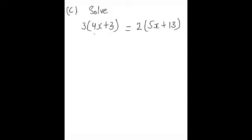How to expand the brackets: we need to multiply the value outside of the bracket with the inside of the bracket. So 3 times 4x is 12x, and the sign is plus, 3 times 3 is 9, is equal to 2 times 5x is 10x, the sign is plus, 2 times 13 is 26.